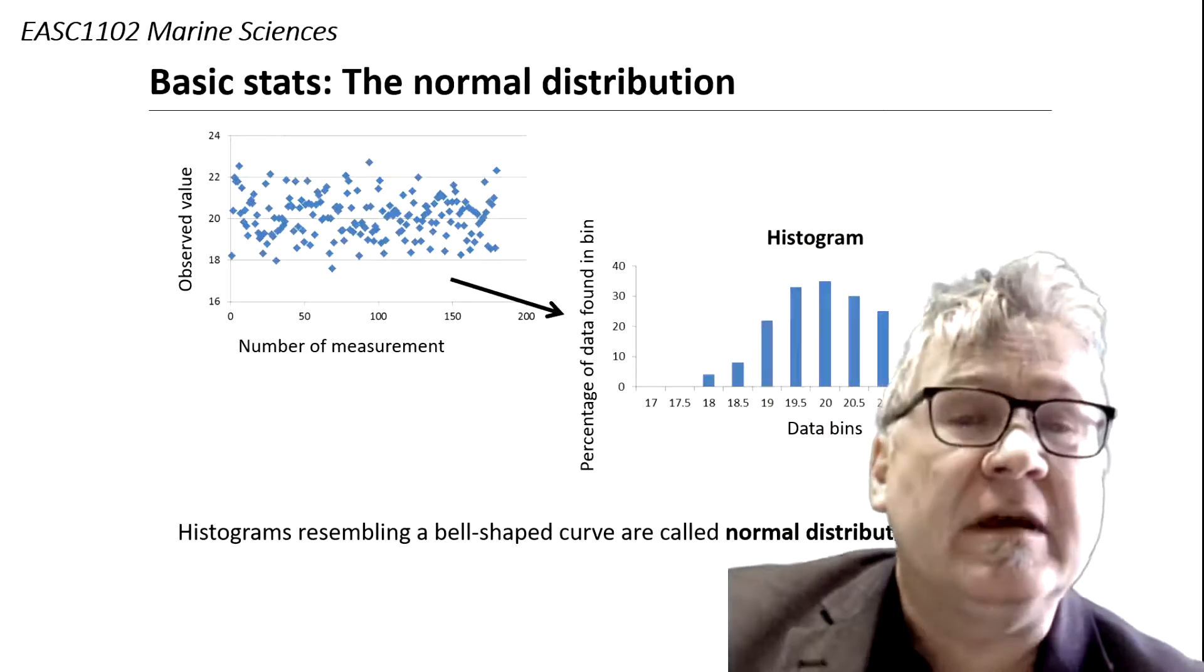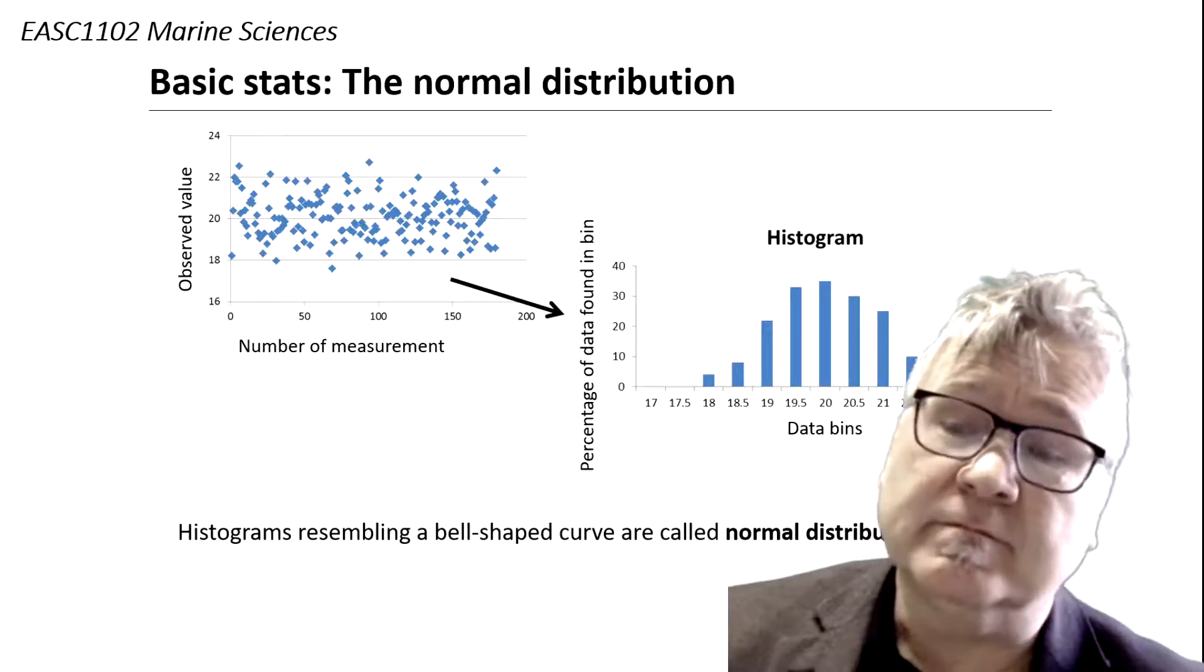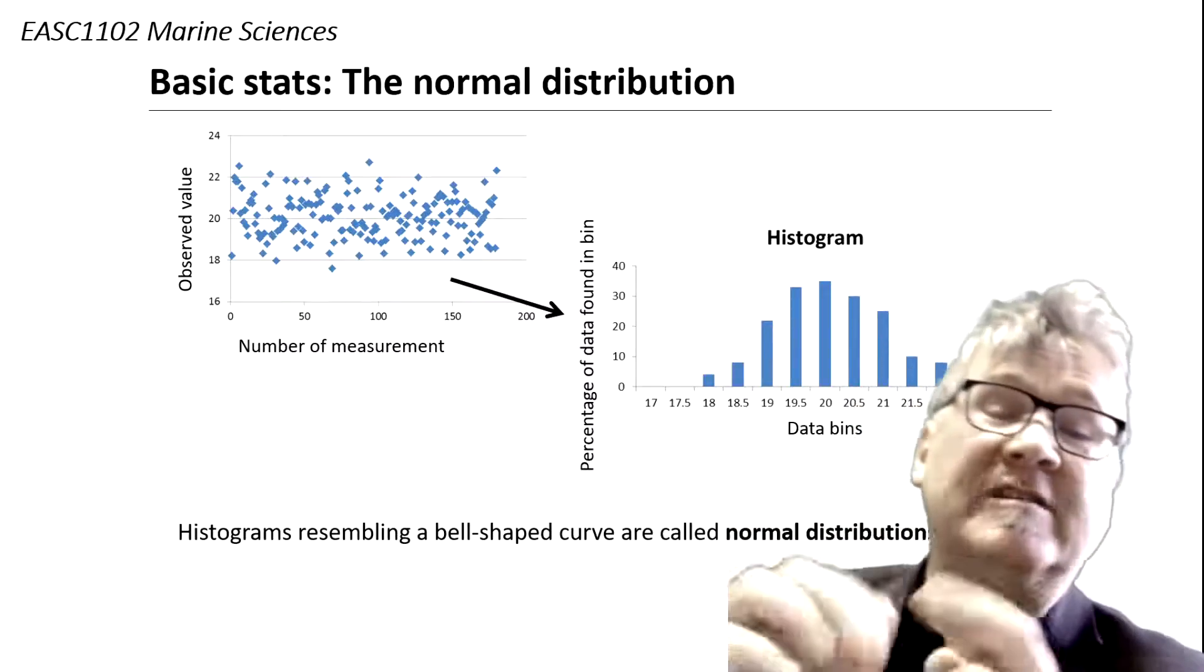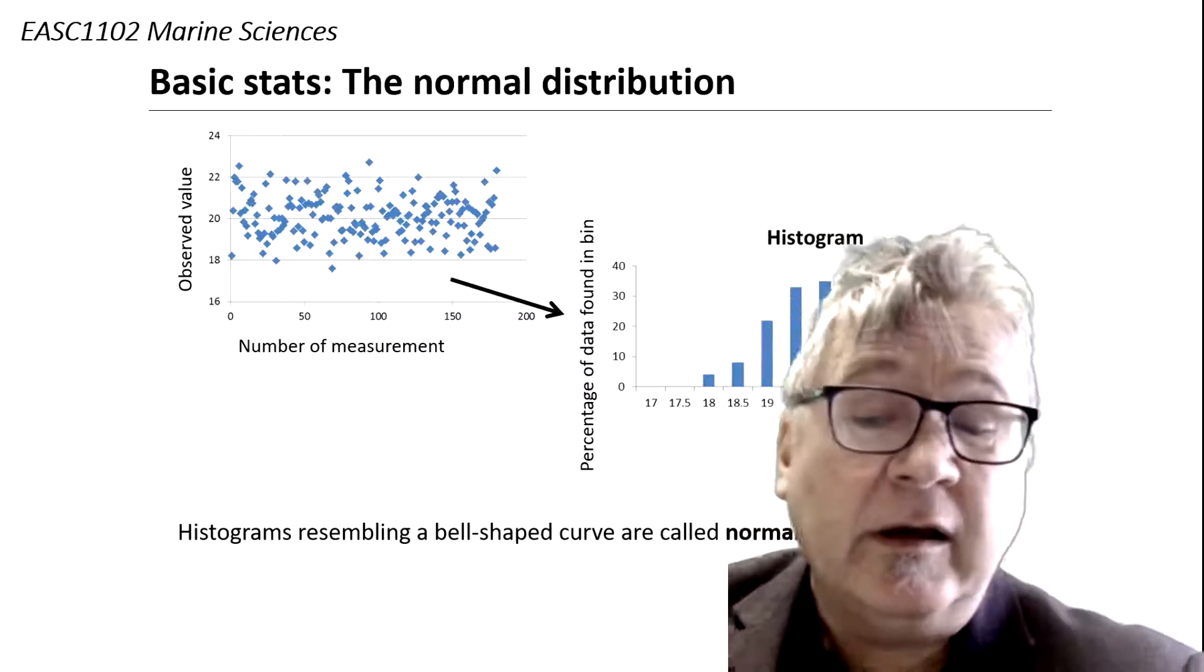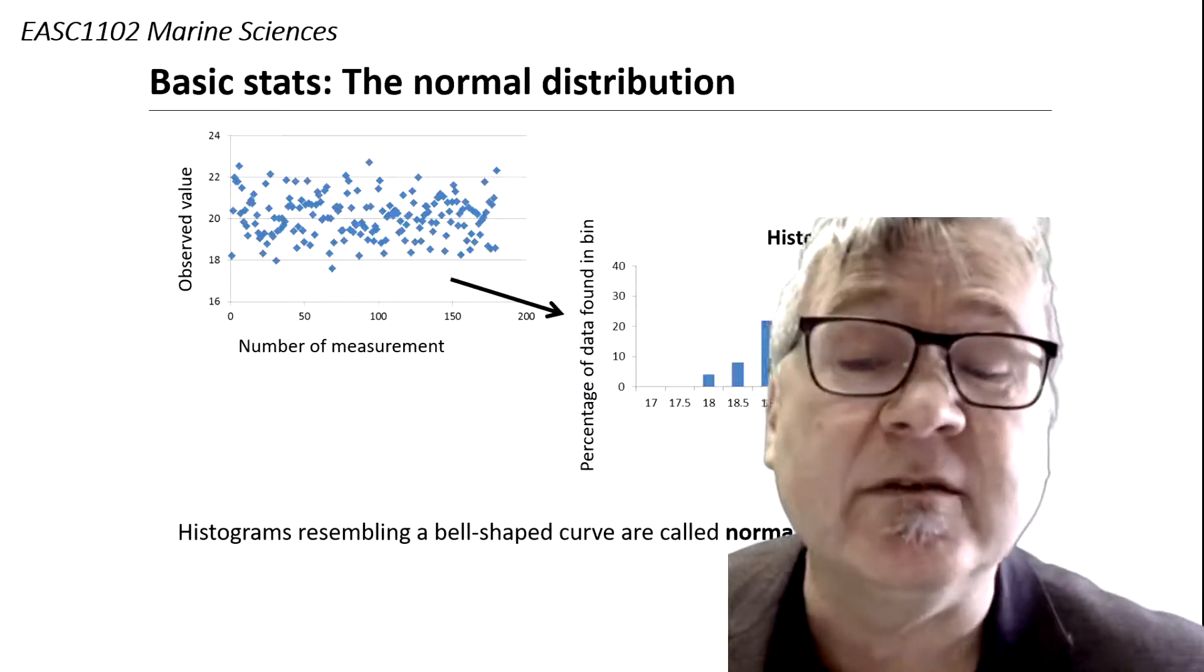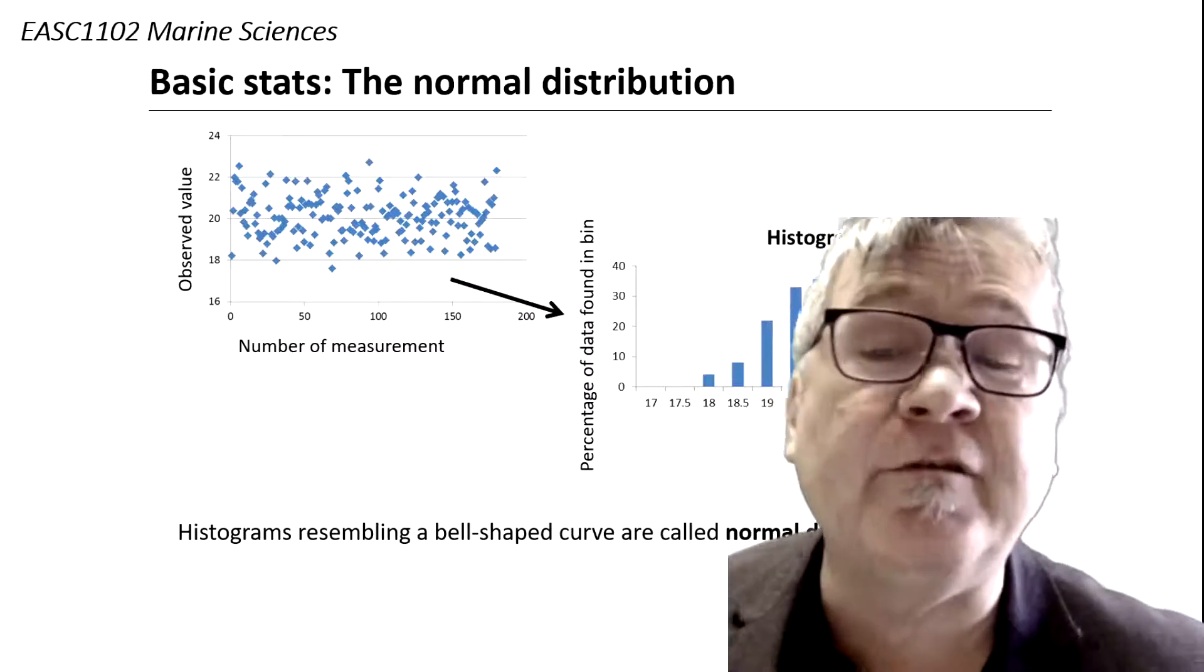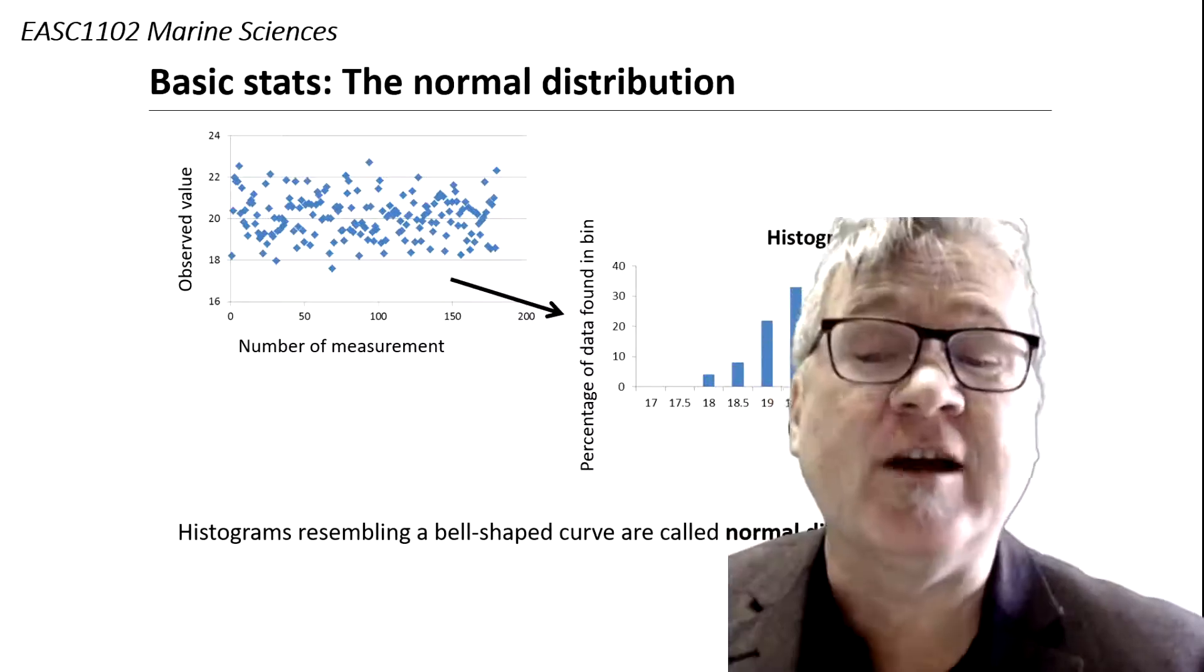What it means is you measure something several times. So for example here on the left, upper left in that graph, there's a number of measurements and the number exceeds 150 measurements of the same controlled feature.